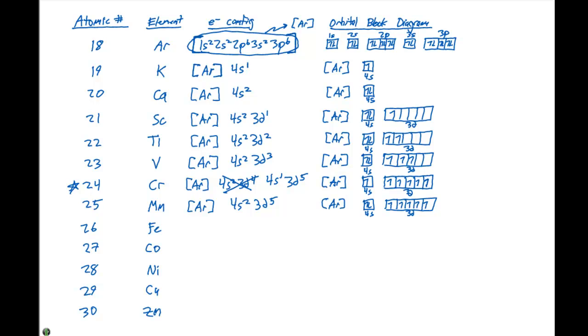For iron, we have the argon configuration. It's gonna be 4s2, 3d6. So, we put both electrons in the 4s orbital. And then, one, two, three, four, five, six in the 3d orbital.